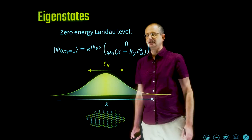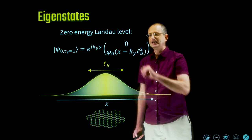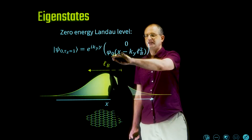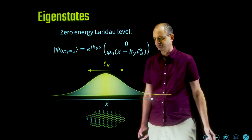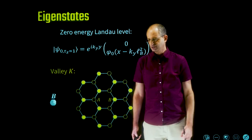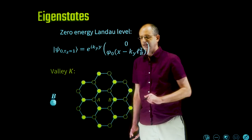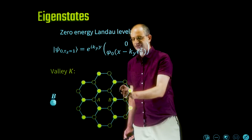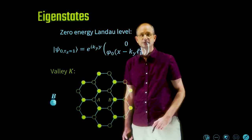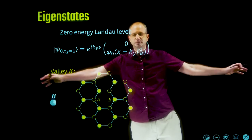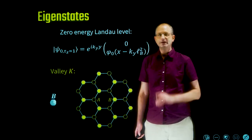Looking microscopically at the actual graphene lattice, the zero-energy Landau level wave function has support entirely on the B-sublattice of the honeycomb lattice, with no weight on the A-sublattice at all. The Gaussian is an envelope function on a much larger length scale than the microscopic lattice.